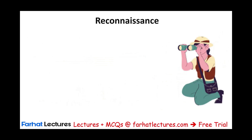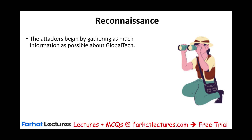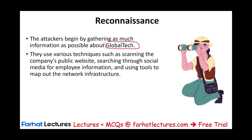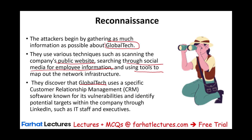The first step is reconnaissance. Attackers start by gathering information about the target — let's assume a company called Global Pack. They use various techniques such as the company's public website, social media for employee information, and tools to map out the network infrastructure. They discover that Global Pack uses specific CRM software known for its vulnerabilities, and they identify potential targets within the company through LinkedIn, such as IT staff and executives.